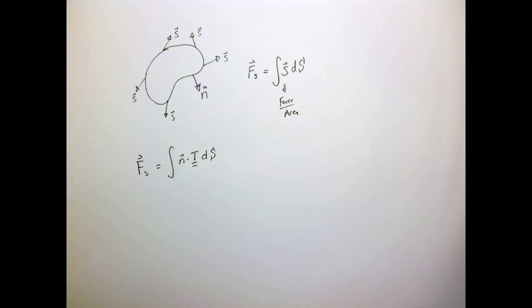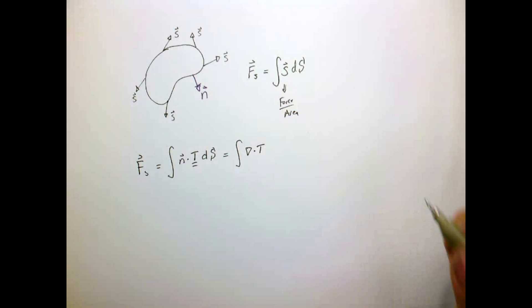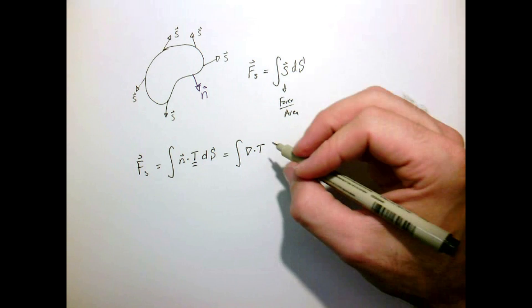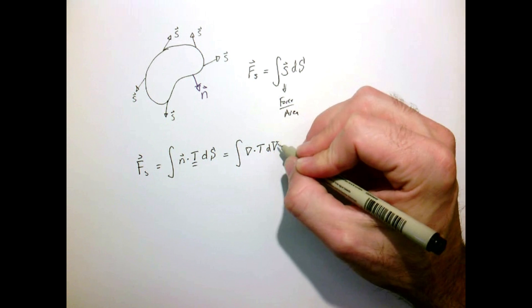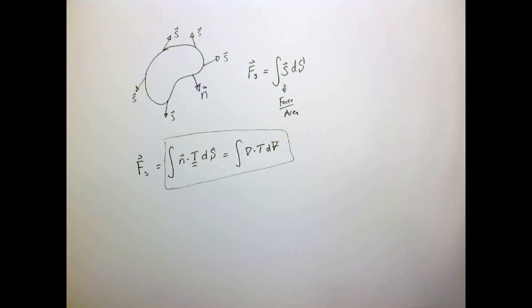Now I won't prove it, but the divergence theorem works just as well for tensors as it does for vectors. So this can be written as the divergence of the stress tensor integrated over the volume. So this is going to be a key result that we need to, or that we're going to use.